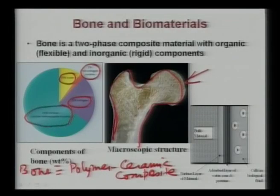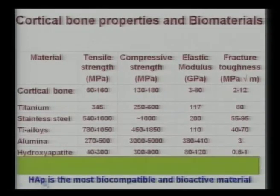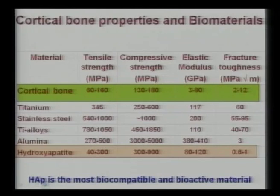This polymer-ceramic composite has natural hydroxyapatite at 65 percent and 23 percent collagen. Accordingly, research is being carried out by various groups on developing polymer-ceramic composites to mimic the natural bone composition and structure. This also shows how cell-material interaction takes place when a biomaterial is implanted, which will be discussed in more detail in future slides.